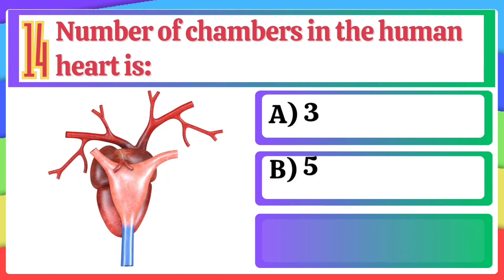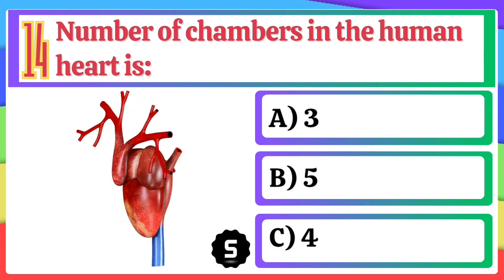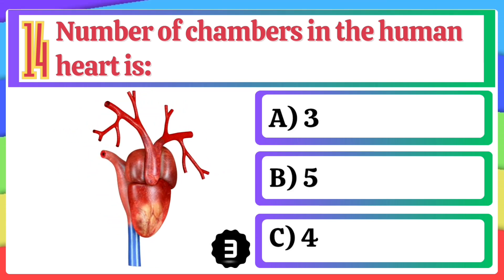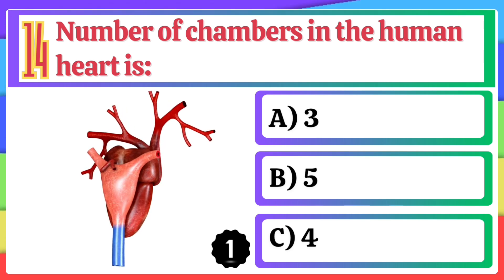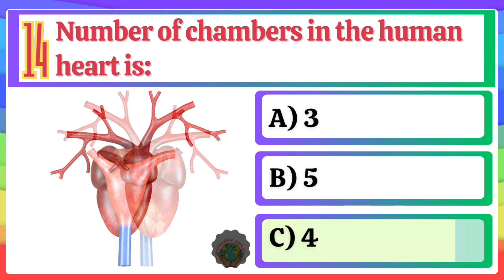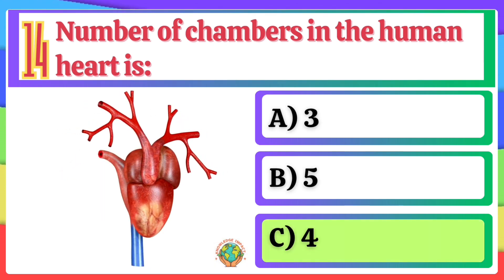Number of chambers in the human heart is: A) 3, B) 5, C) 4. The correct option is C, 4.